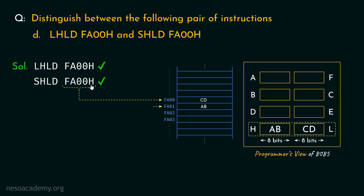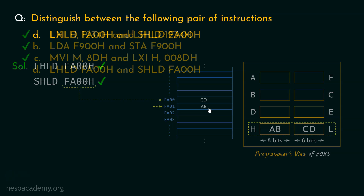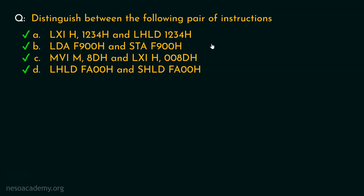To summarize: LHLD FA00H loads the HL register pair using the contents stored at memory locations FA00H and FA01H — FA00's content goes into L, FA01's content goes into H. For SHLD FA00H, which stores the HL register pair using direct addressing, the L extension's content is stored first into FA00, and then the H register's content is stored into the consecutive location FA01.